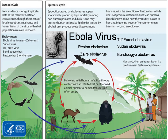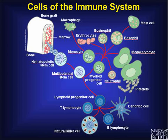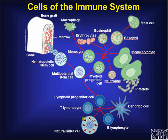Ebola normally attacks the dendritic cells, which control the immune system. It directs the dendritic cells to tell the T cells and natural killer cells — which control many of the white blood cells and kill viruses and bacteria — to die. The dendritic cells give this command because they are now controlled by Ebola.